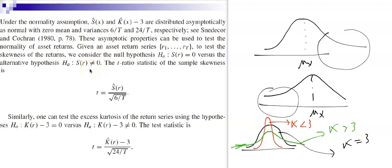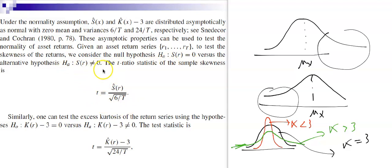We can test whether skewness is zero or not — in effect testing the normality assumption for returns. The test statistic divides the estimated skewness by the square root of its variance. Similarly for kurtosis: H0 is K(X) = 3, and the alternative is K(X) ≠ 3. If kurtosis differs from 3, the data are not normally distributed.